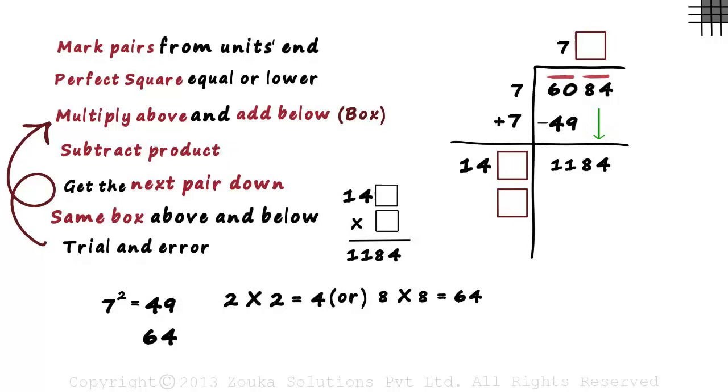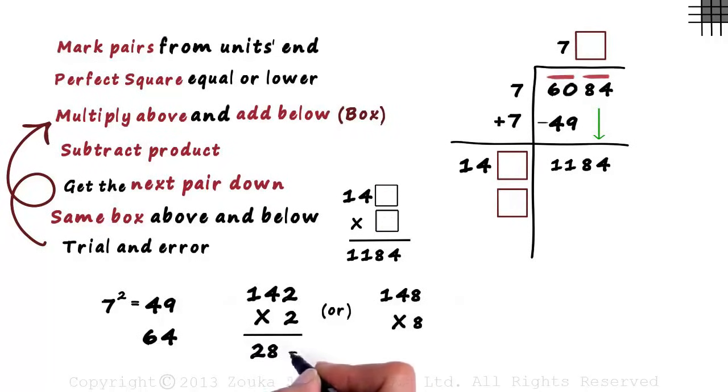2 times 2 equals 4 or 8 times 8 equals 64. Both have the units digit as 4. It will either be 142 times 2 or 148 times 8. The digit in the box will either be 2 or 8. The first product gives us 284 and the second product gives us 1184. Exactly what we wanted. The digit in the boxes will be 8.